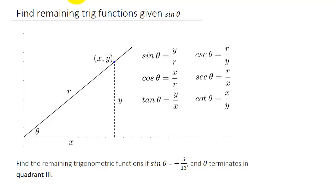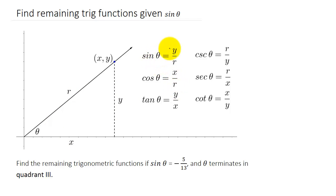If we have theta in standard position, the initial side lies along the positive x-axis. Here's x, here's y, and here's r. So sine theta is y over r, cosine theta is x over r, tangent theta is y over x, cosecant theta is r over y, secant theta is r over x, and cotangent theta is x over y.